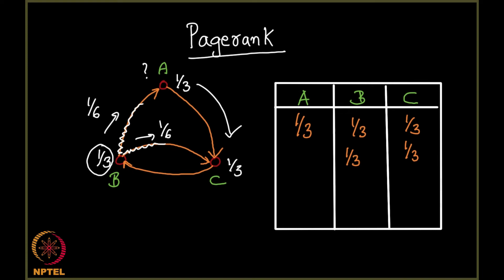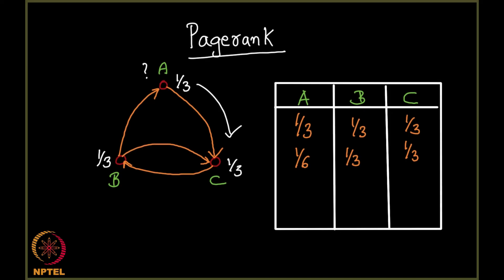So A gets 1/6 in the second iteration. B also gives 1/6 to C, so C receives 1/3 from A plus 1/6 from B, giving C a total of 1/3 + 1/6 = 1/2. So after the second iteration the values are: A = 1/6, B = 1/3, C = 1/2.